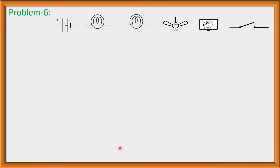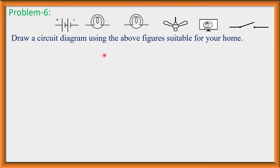Problem 6: Draw a circuit diagram using the given figures, suitable for your home. We have to draw a circuit using two electric bulbs, one fan, one television, a battery, and a switch. For our home, a parallel circuit is more convenient and suitable. We will draw a parallel circuit using these figures.